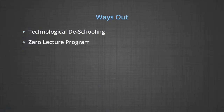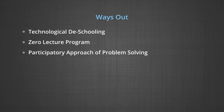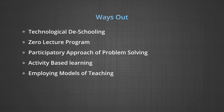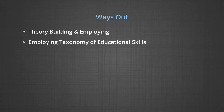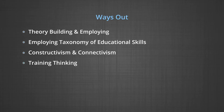Ways out include: technological de-schooling, zero lecture program, participatory approach to problem solving, activity-based learning, employing models of teaching, theory building and employing taxonomy of educational skills, constructivism and connectivism, training thinking, and holistic learning.